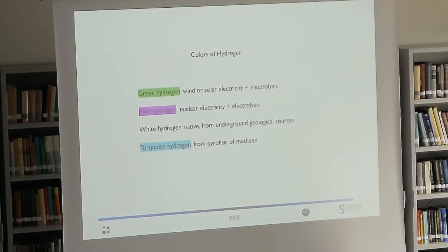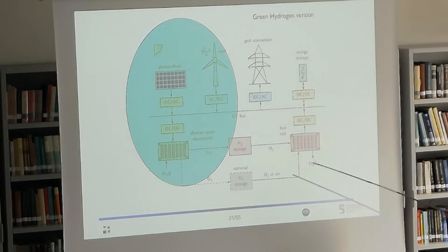There are three colors of hydrogen, actually there are even many more colors of hydrogen, but there are three colors I will talk about. Green hydrogen is produced from wind or solar electricity. Pink hydrogen is produced by nuclear electricity. And turquoise hydrogen is produced from the pyrolysis of methane. This is a little less well-known.